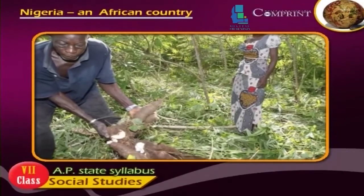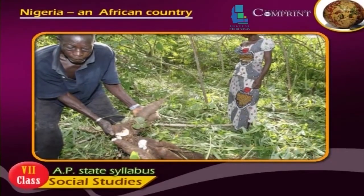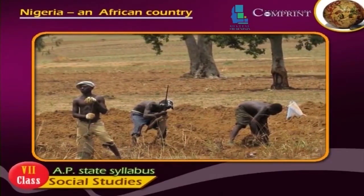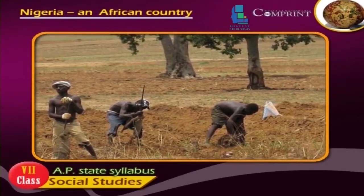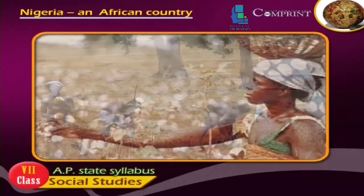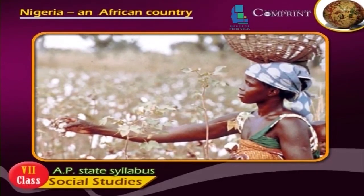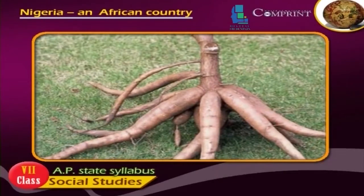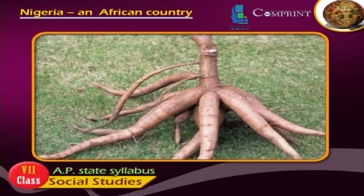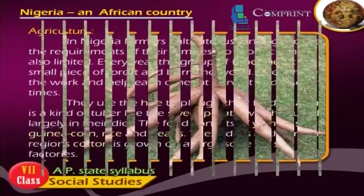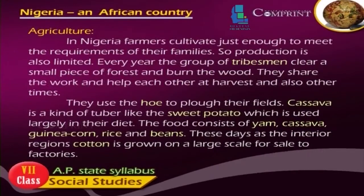In Nigeria, farmers cultivate just enough to meet the requirements of their families, so production is also limited. Every year, groups of tribesmen clear a small piece of forest and burn the wood. They share the work and help each other at harvest and at other times. They use the hoe to plow their fields. Cassava, a kind of tuber like the sweet potato, is used largely in their diet. The food consists of yam, cassava, guinea corn, rice and beans. In the interior regions, cotton is also grown on a large scale for sale to factories.